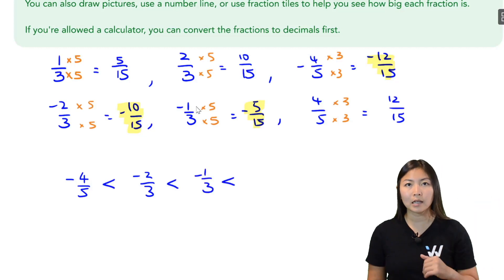Done with negatives. Now let's deal with positives. Out of the positive numbers, which one is the smallest positive number? Well, 5 out of 15 is smaller than 10 out of 15, which is smaller than 12 out of 15. I'm just looking at the numerator, right?